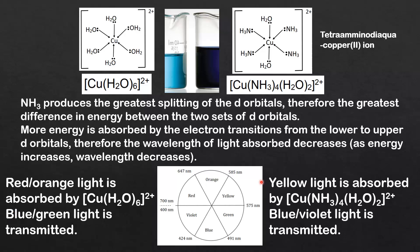Next the complex ion on the right. Yellow light is absorbed by the tetra-amino-diaqua-copper-2 ion and blue violet light is transmitted.